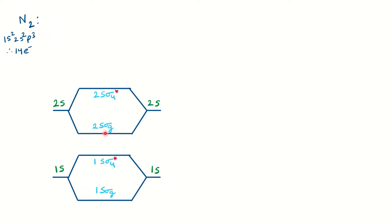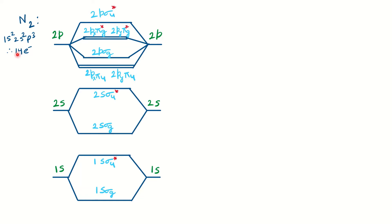Similarly for the 2s orbital, the bonding orbital is 2sσg and the antibonding is 2sσu. Then comes the 2p orbitals. Since nitrogen has 14 electrons, there is a rule: if you have 14 or fewer electrons, the π orbital will have lower energy than the pσg. So you draw the π orbital first, then the σ orbital for the p orbital in the ground state. The antibonding states remain the same — π first, then σ. The only change between π and σ ordering applies to the ground state.